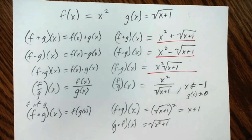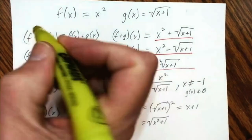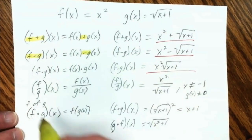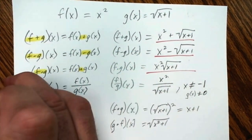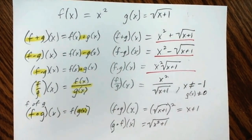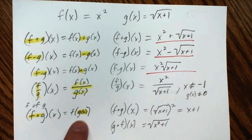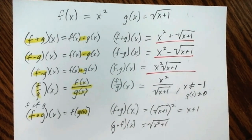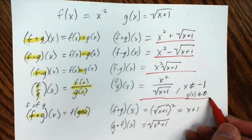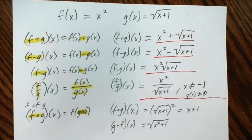The main thing to know: f plus g means you're just adding them together; f minus g means you're subtracting; f times g means you're multiplying; f divided by g means you divide the actual functions. And f of g means you're going to substitute g into f where the x is. That's the nice big picture. All we did is add them together, subtract them, multiply them, or divide them.